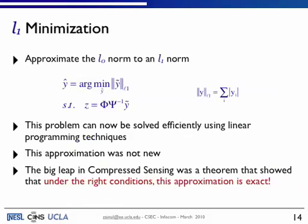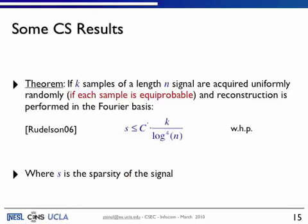The big leap that happened a few years ago, about five years ago in compressed sensing, was that you could approximate this L0 norm to the L1 norm, which is essentially saying that instead of optimizing the non-zero values, you optimize the sum of magnitudes of those values. And what they showed was that under the right conditions, that approximation, the relaxation from L0 to L1, was exact. You get the same answer. And so what are those right conditions? Those conditions, again, surprisingly, are that if those k samples of an n-length signal were acquired uniformly randomly, which means that if the samples are equiprobable across that sine wave, and the reconstruction is performed in the Fourier basis, in this case, for the Fourier basis, then this bound holds, where s is the sparsity of the signal, which is that if it's one sine wave, s is equal to one, and k is the number of samples that you need.